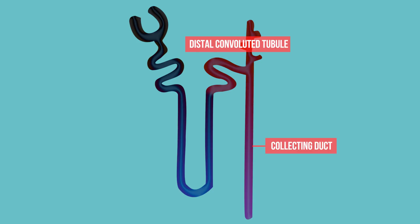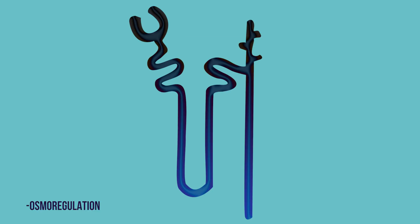The precise amounts of water and salts reabsorbed is important in osmoregulation. This is one role of the distal convoluted tubule and collecting duct. They also control the blood pH. We will look at these functions in more detail in another video.